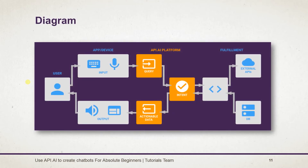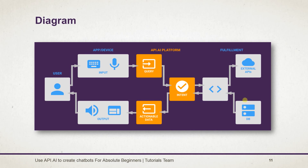Here is a diagram that represents how our request will be handled by api.ai. The user will give input to our devices or app by using voice or text, which will be converted to a query by the agent. From this query, it will call the appropriate intent. Using those intents, we can call the fulfillment and perform actions — it could use other APIs to perform operations or simple database operations. After performing the operation, fulfillment returns the data to the intent, which provides actionable data. Using this, we can perform operations on the devices — it could display data on the screen, set an alarm, or anything else.